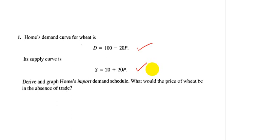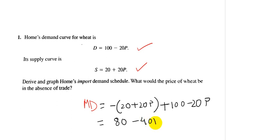What would the price of wheat be in the absence of trade? The import demand equation MD can be found by subtracting the home supply equation, that is 20 plus 20P, from the demand equation. Upon solution, this comes to 80 minus 40P.